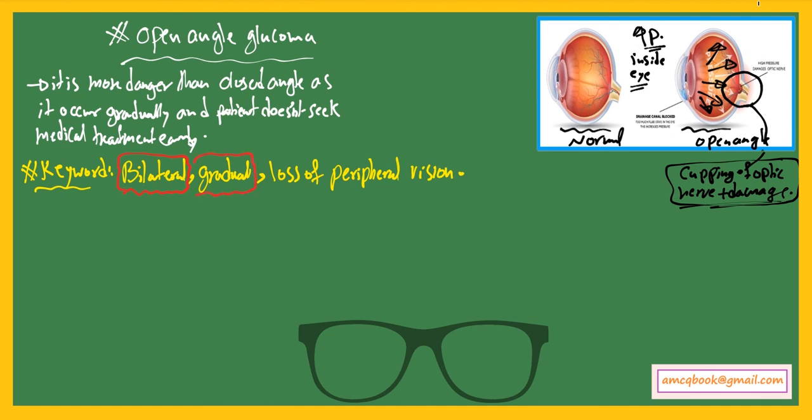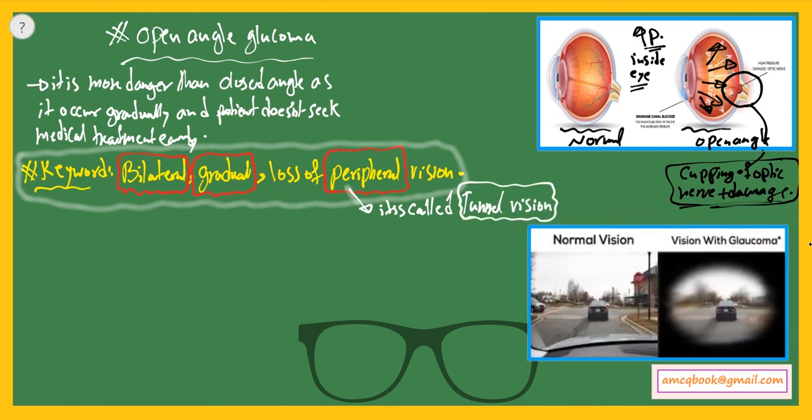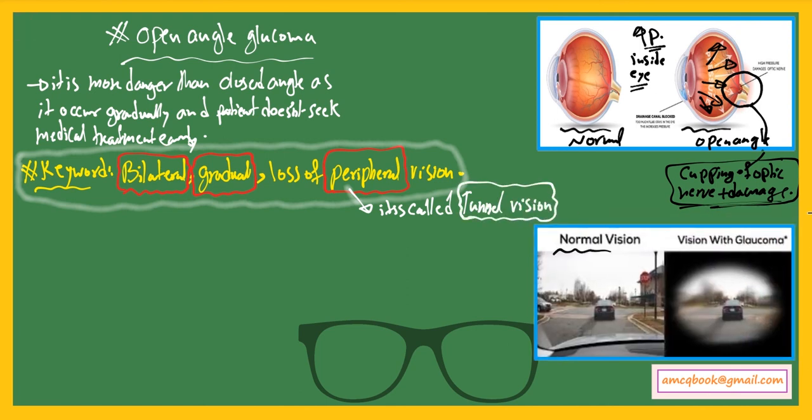If you look at the picture, on the left is a normal eye, on the right is an eye affected with open angle glaucoma where the patient suffers from loss of peripheral vision.